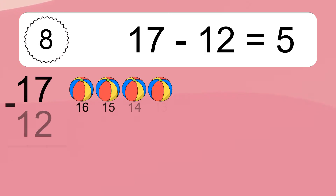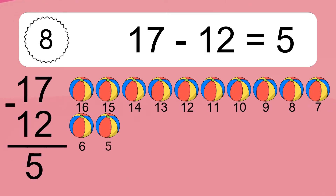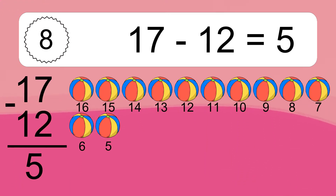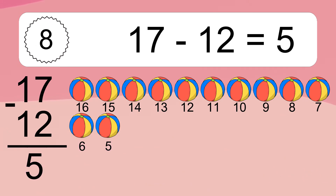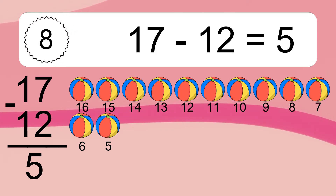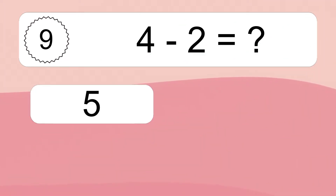17 minus 12 equals what? 17 minus 12 equals 5. Let's count it: 16, 15, 14, 13, 12, 11, 10, 9, 8, 7, 6, 5.